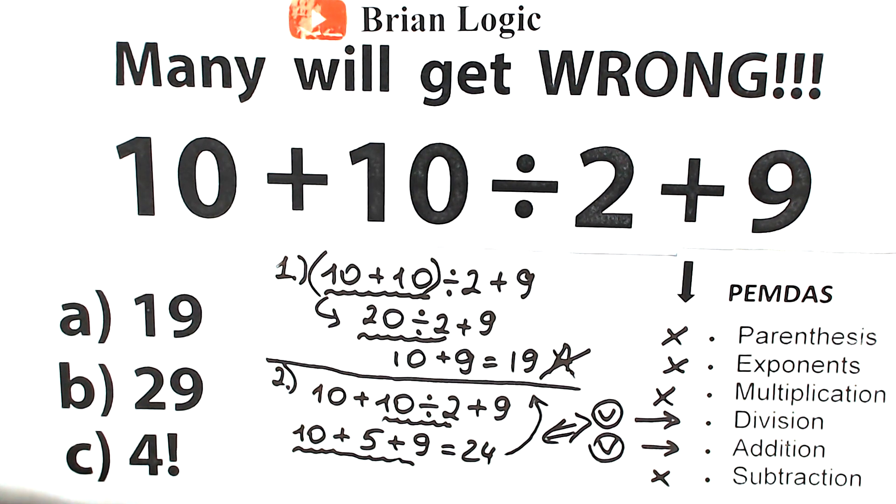It doesn't matter what order of operations you select - BODMAS, PEMDAS, or another order of operations - you will have the same answer. So what about options A, B, and C? The answer is obviously 24.